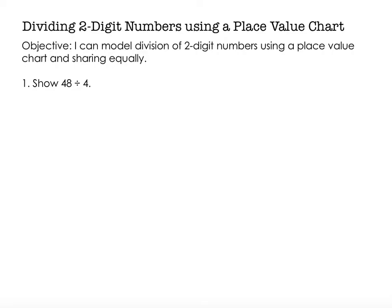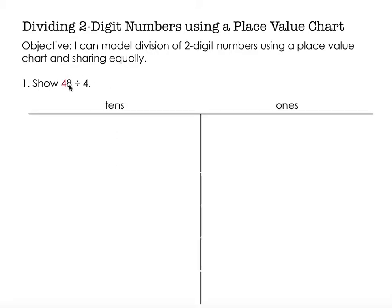So I'm going to show 48 divided by 4. The first thing I'm going to do is create a place value chart that has a tens place and a ones place for 48. So I have my tens place and my ones place. 48 is made up of 4 tens, so I'm going to show that in my place value chart.